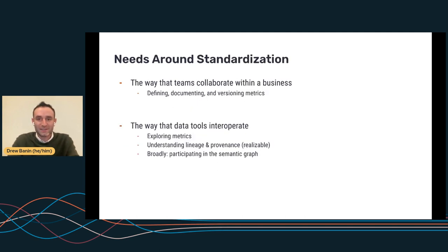And so we can look at this need for standardization in two ways. The first one is, how do the teams in a business collaborate around metrics? So how are they defined? How are they documented? And when these business metrics change, when their definitions change, and sometimes they do, how do we version control those changes?